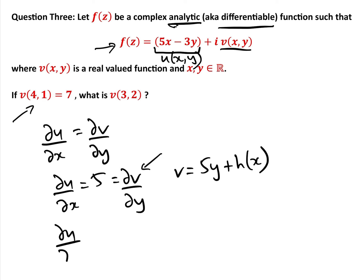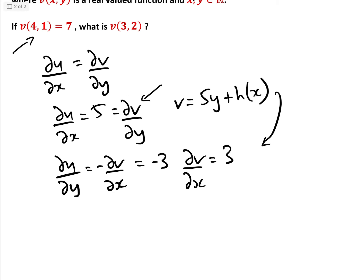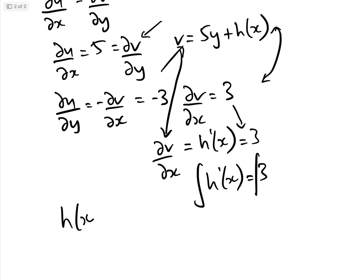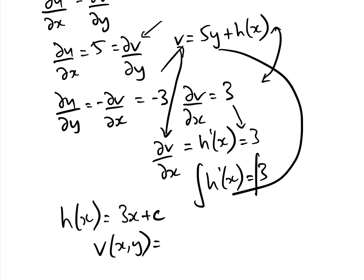Using the second Cauchy-Riemann equation, ∂u/∂y = -∂v/∂x: we have ∂u/∂y = -3, so ∂v/∂x = 3. Differentiating v = 5y + h(x) with respect to x gives h'(x) = 3. Integrating, h(x) = 3x + c. Therefore v(x,y) = 5y + 3x + c.